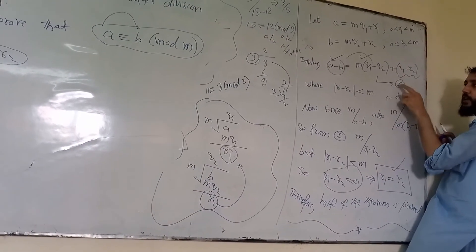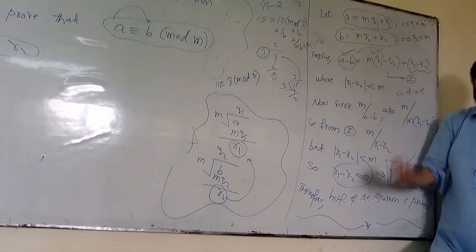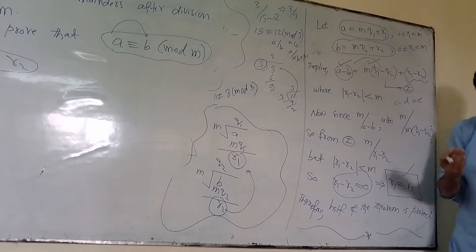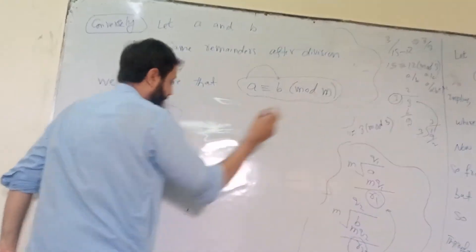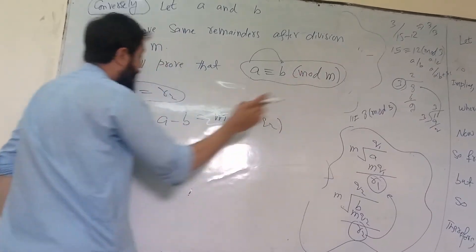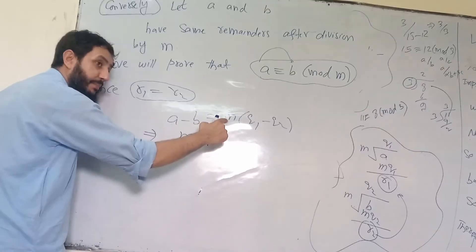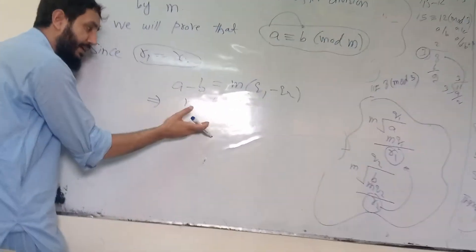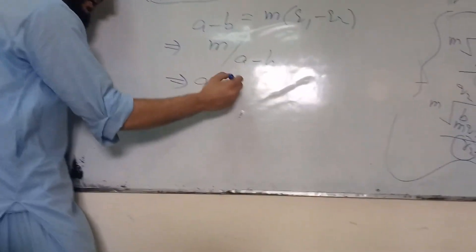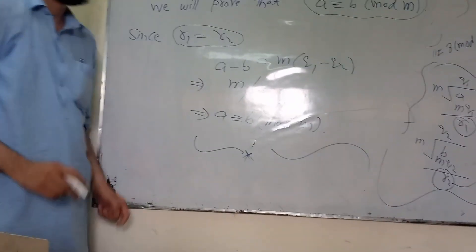Since we suppose the remainders of A and B are equal after division by M, we simply put R1 equal to R2 in the subtracted equation. From dividing A by M and B by M and subtracting, we got A minus B equals M times (Q1 minus Q2) plus (R1 minus R2). Simply put R1 equal to R2: then A minus B equals M times (Q1 minus Q2), since R1 minus R2 becomes zero. This is nothing but the definition of divisibility — A minus B is a multiple of M — and hence by the definition of congruence, A is congruent to B modulo M. And hence the theorem is proved.